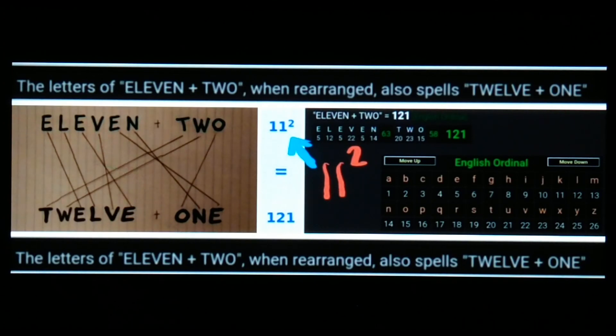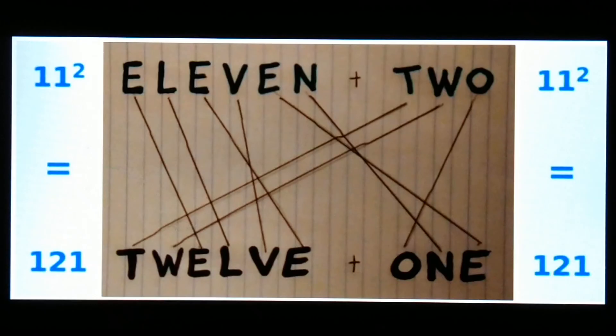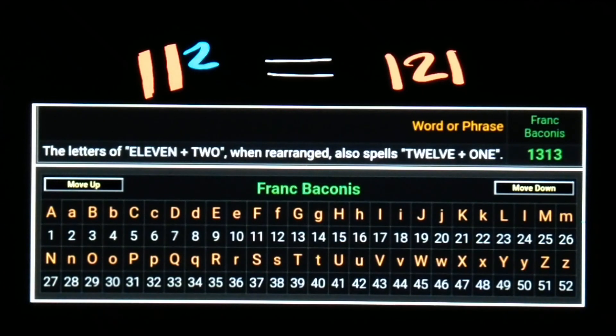So you know, of course you see the 11 and the 2, and then the words "11 2 12" equals 121, just like 11 squared equals 121. "11 2" and "12 1"—and it doesn't matter what cipher we're looking at, those words "11 2" are a match in all ciphers with the words "12 1". There's probably a lot more to say about this, but I wanted to keep this simple.